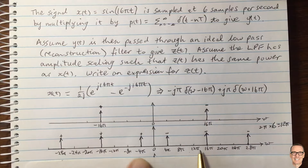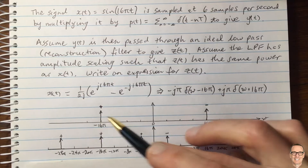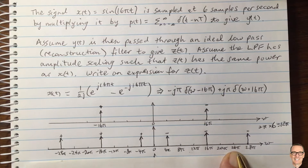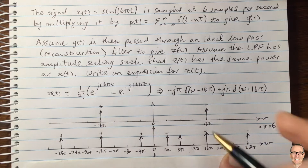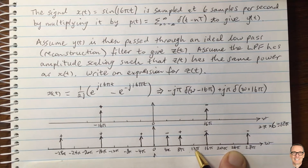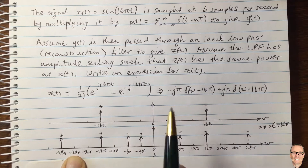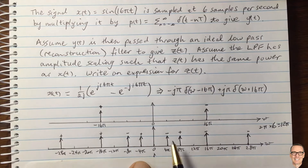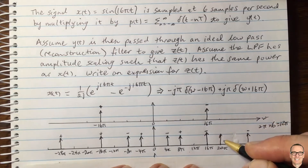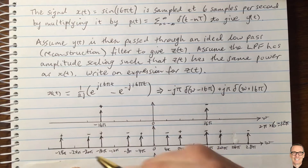There are also copies at twice the sampling frequency — at 24π. Centered at 24π, going 16 down gives 8π, where there's a delta function with a positive. Centered at minus 24π gives a spike at minus 8π with a negative. There will also be ones at 20π and minus 20π. You can see the repeating pattern of copies throughout the frequency domain.